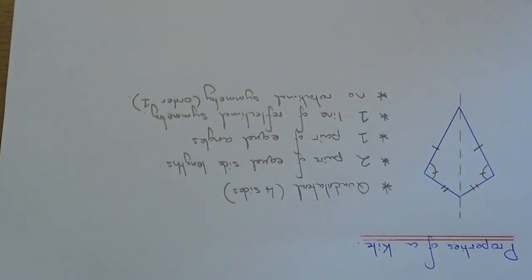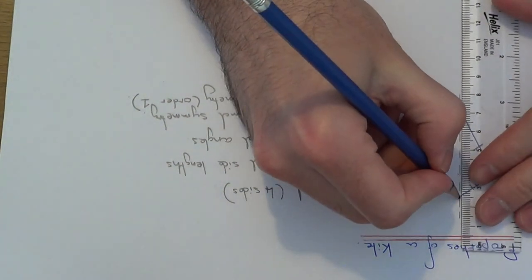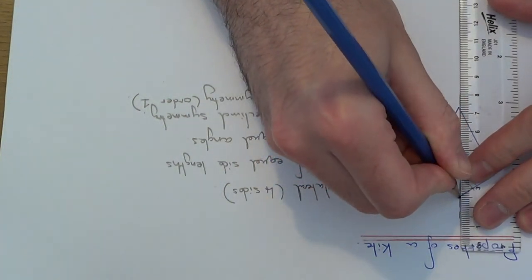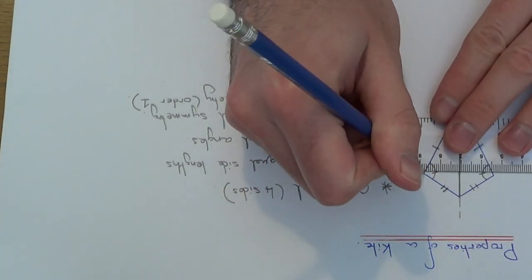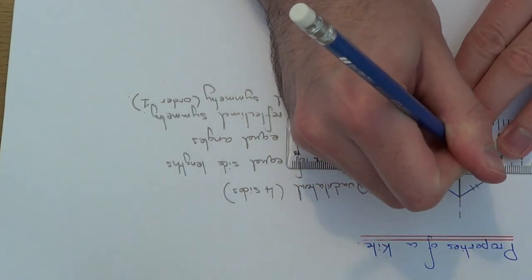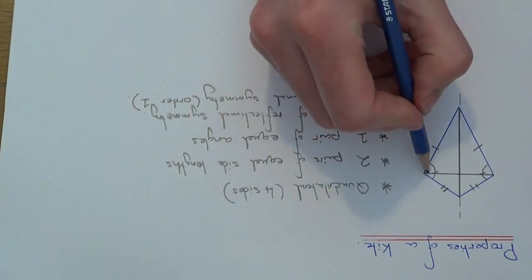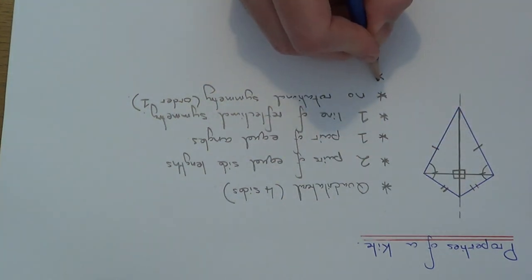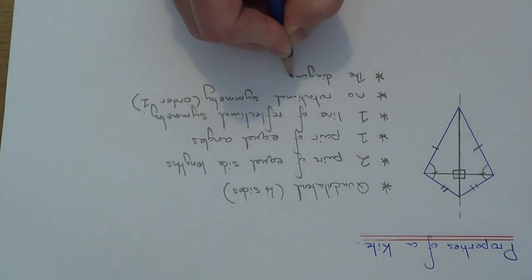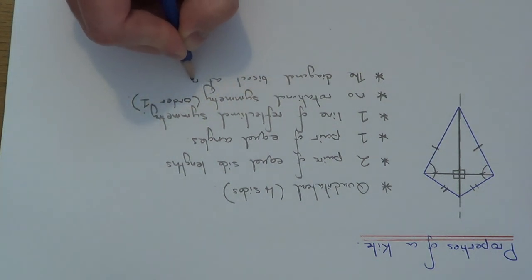Let's do one final property of a kite. Let's draw the diagonals on the kite shape. The diagonals go from corner to corner. As you can see, if you draw the diagonals in, they bisect each other at right angles. So the diagonals bisect at right angles.